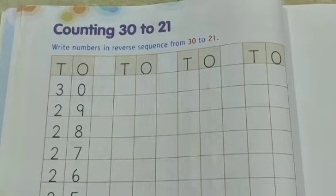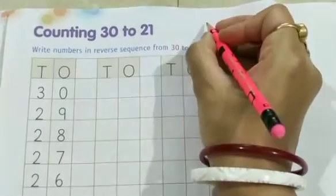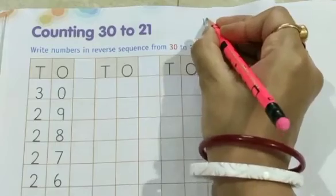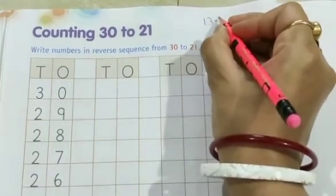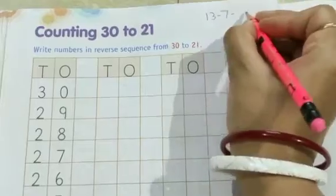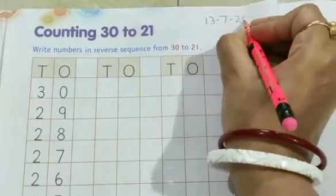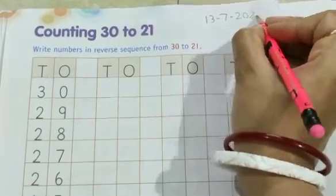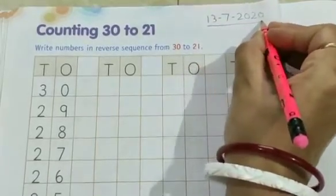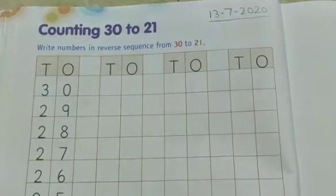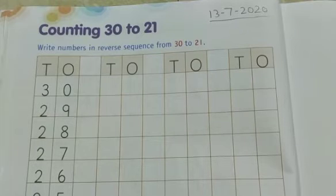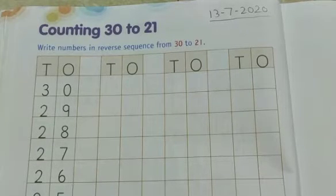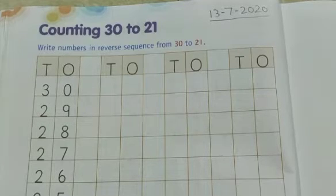So children, tell me what is the date today? So today the date is 13th July 2020 and our topic is counting 30 to 21. Write numbers in reverse sequence from 30 to 21.